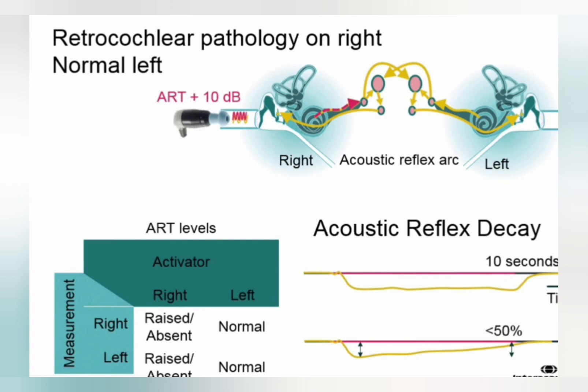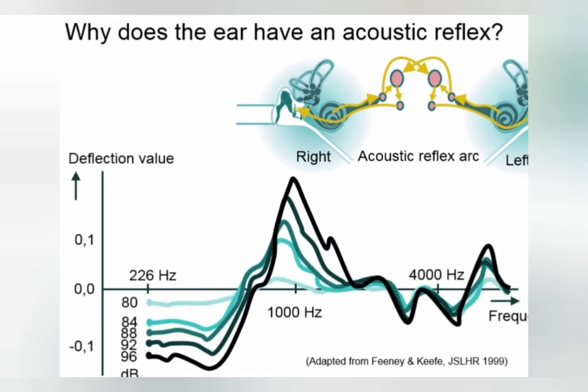This is one way to differentiate acoustic neuroma by indirect means. Of course, for acoustic neuroma we have MRI to diagnose, and also ABR can be done, but reflex decay is an indirect way of assessing and can be used as a screening tool before proceeding with MRI.